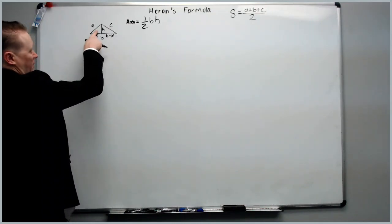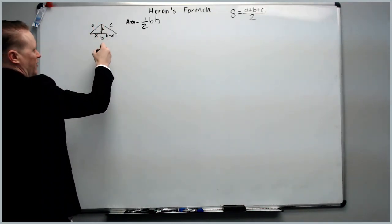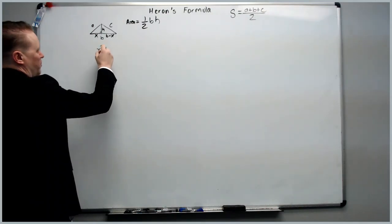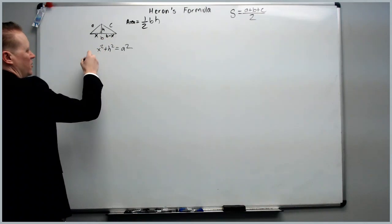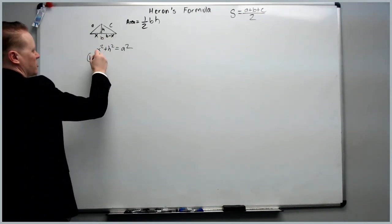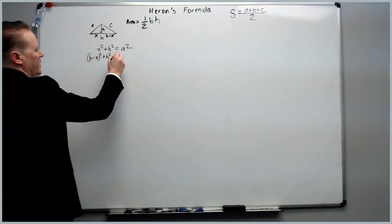So we progress. We're going to make, over here now, this is a right triangle on both sides. We'll do Pythagorean. That's X squared plus H squared equals A squared, and over here we'll get B minus X squared plus H squared equals C squared.